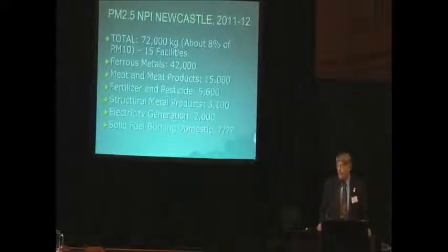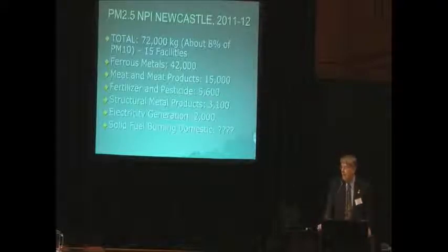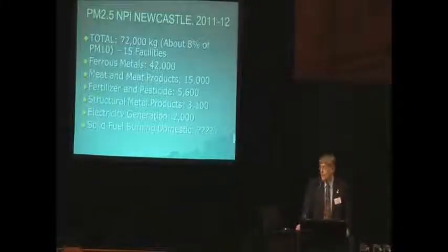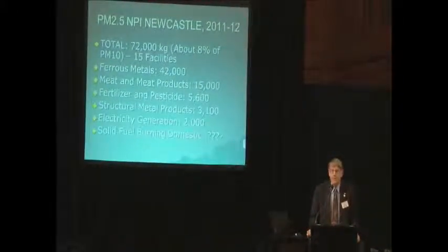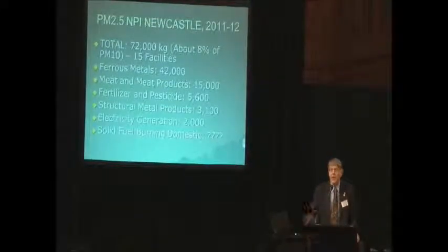For PM2.5 the picture is a little different. Remember that PM2.5 is a subset of PM10, so PM10 results include PM2.5, but PM2.5 on its own is about 8% of total PM10 in the NPI estimates — 72,000 kilograms. Ferrous metals is first at 42,000, then meat and meat products, fertilizer and pesticide emissions, structural metal products, and electricity generation. Notably, I can't find anything about solid fuel burning domestic in the PM2.5 data, which raises concern about whether PM2.5 is really as complete in the NPI as it should be.